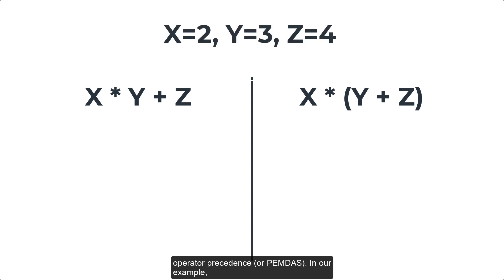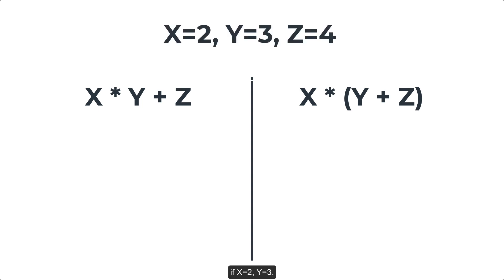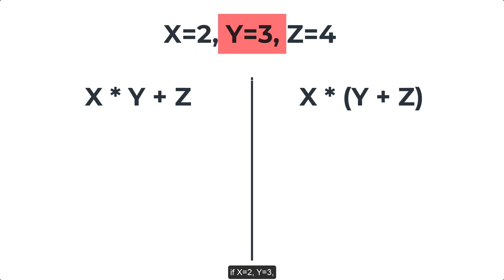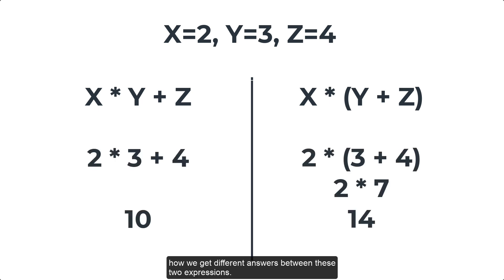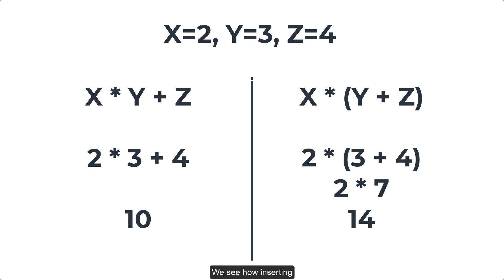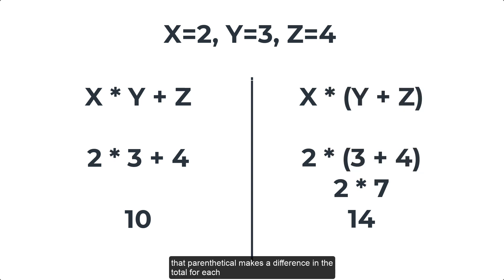In our example, if x equals 2, y equals 3, and z equals 4, then we see how we get different answers between these two expressions. We see how inserting that parenthetical makes a difference in the total for each expression.